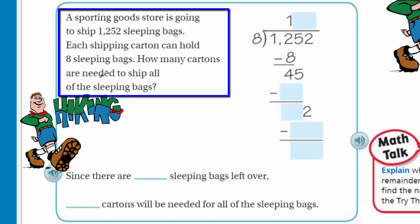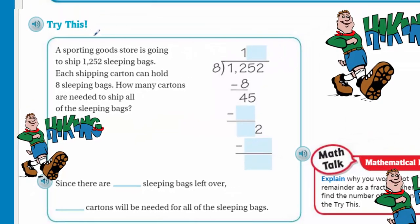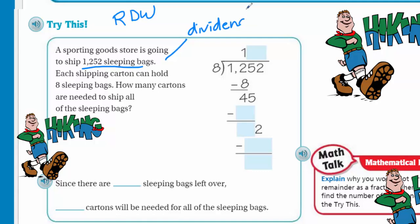Try this: a sporting goods store is going to ship 1,252 sleeping bags. Each shipping carton can hold 8 sleeping bags. How many cartons are needed to ship all of the sleeping bags? This reminds me of the RDW method — read, draw, write. Reading the problem: 1,252 is my dividend, and each carton holds 8, so 8 is my divisor. You can see how this is set up as a division problem.